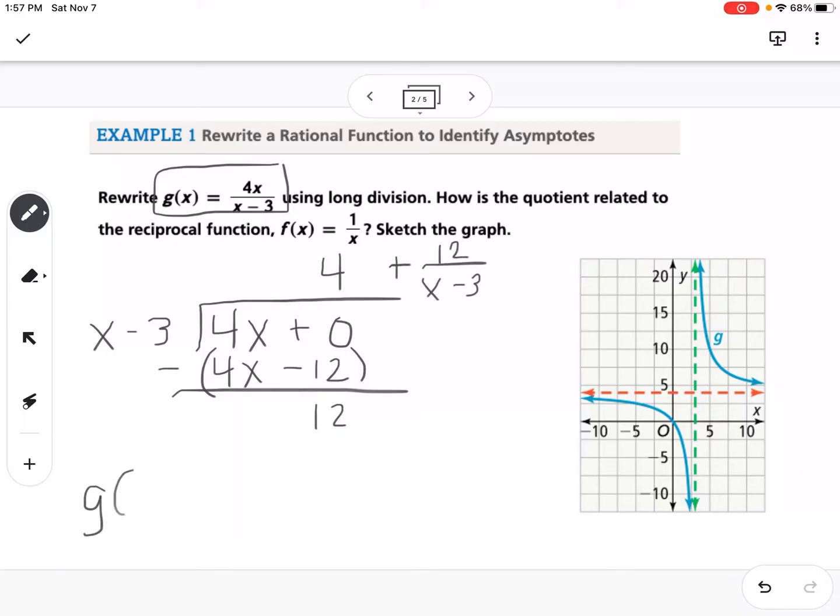We can rewrite g(x) as 4 plus 12 over x minus 3. What that allows us to see is that the positive 4 out front is a shift up 4, the x minus 3 is a shift to the right 3, and the 12 is a vertical stretch by a factor of 12.